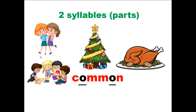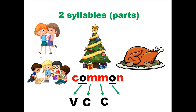Here are the two vowel sounds. Now let's check the pattern: first vowel sound, another consonant, another consonant, and a vowel sound. So this word follows the VCCV pattern. It is made up of two syllables and should be divided in the middle between the double consonants.